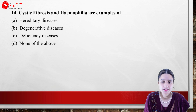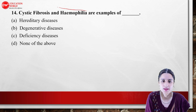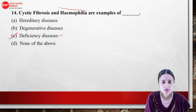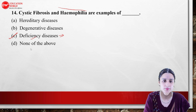My next question: Cystic Fibrosis and Hemophilia are examples of what type of disease? These are genetic or hereditary diseases, not deficiency diseases.